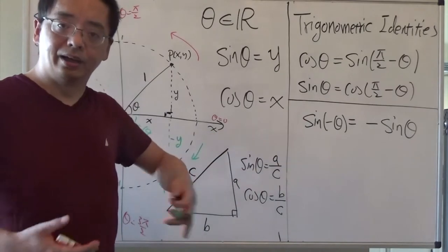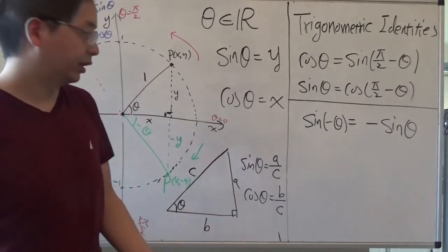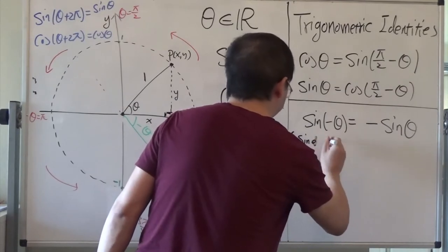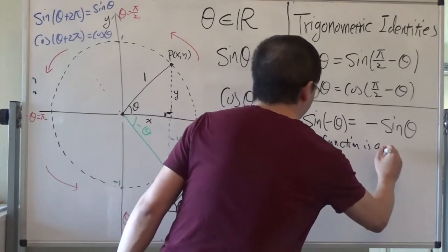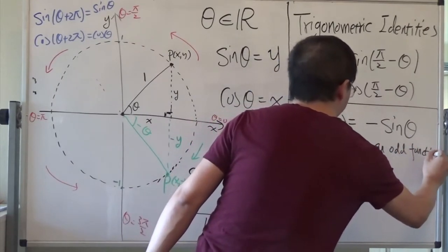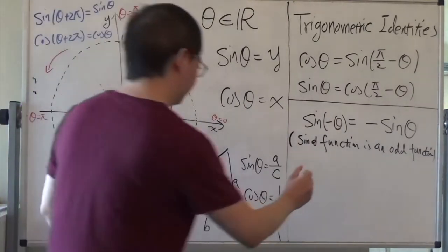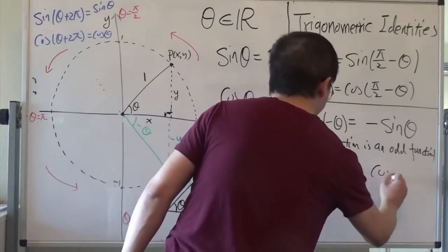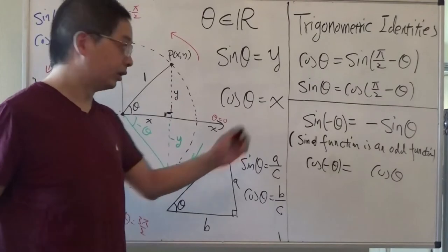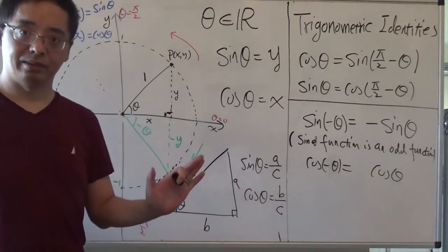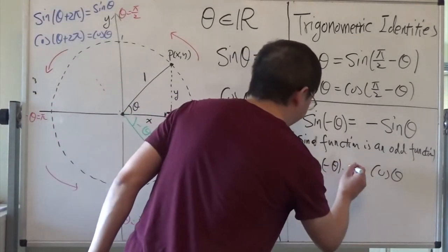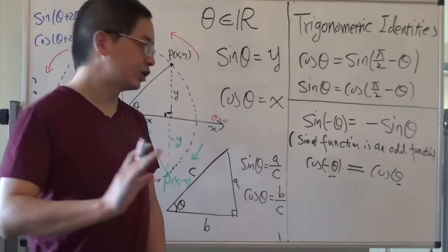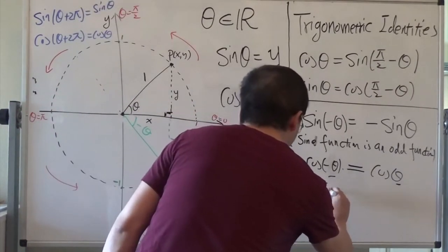From this we can say the sine function is an odd function. Now, how about cosine θ? Cosine θ is given by the x-coordinate. For θ and −θ, the x-coordinate is the same — it does not change. Therefore cos(−θ) = cos(θ). In other words, the cosine function is an even function.